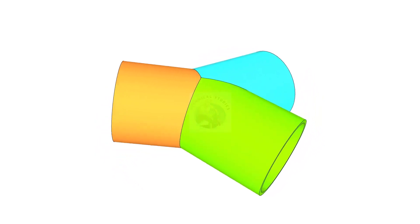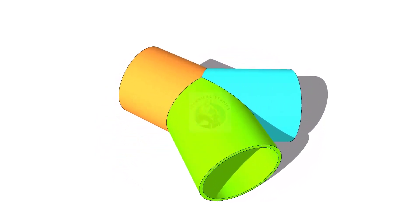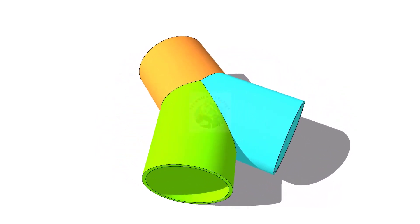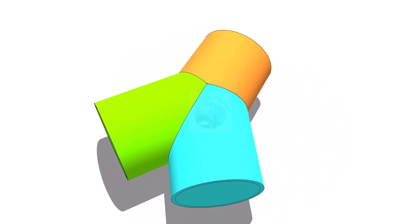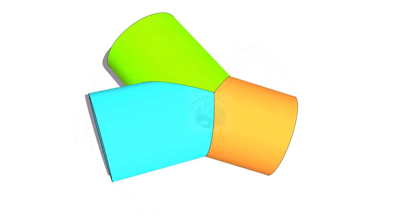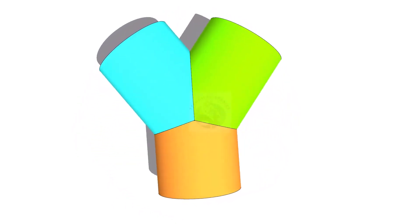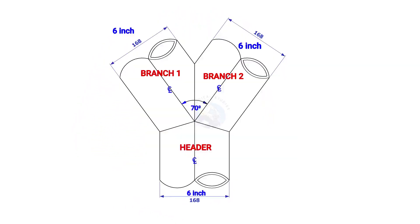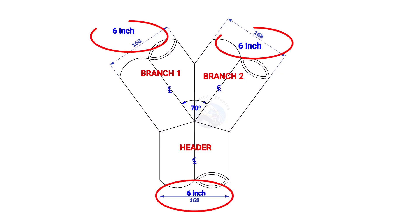Welcome to the technical studies. In this video we will learn how to lay out a Y branch. The size of the Y branch in this example is 6 inches and the included angle is 70 degrees.